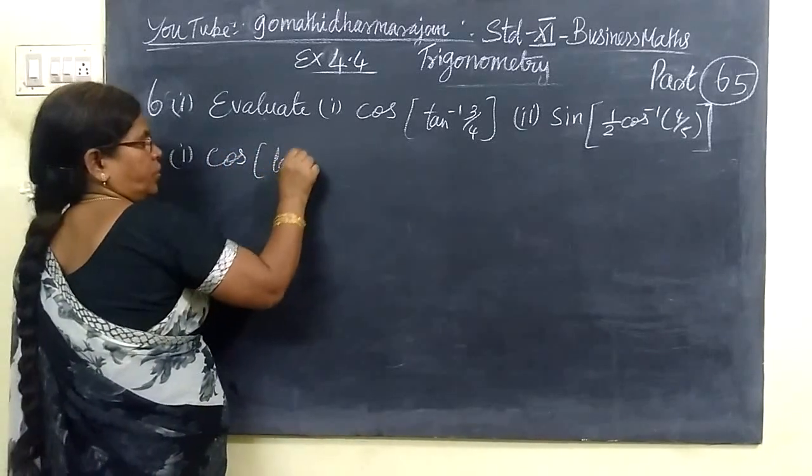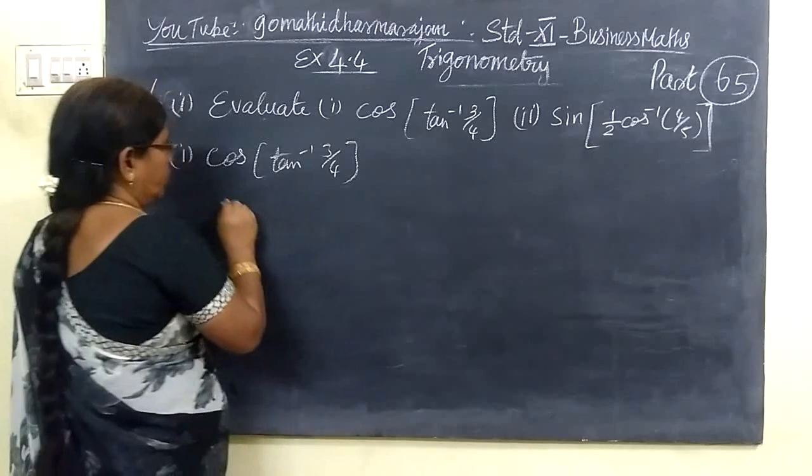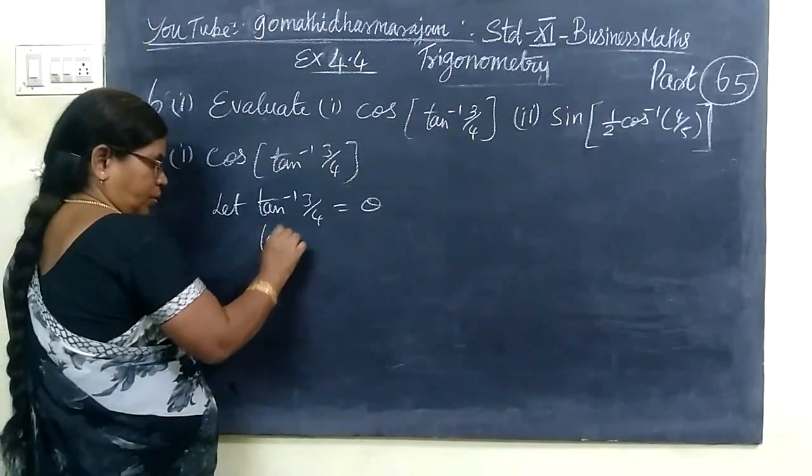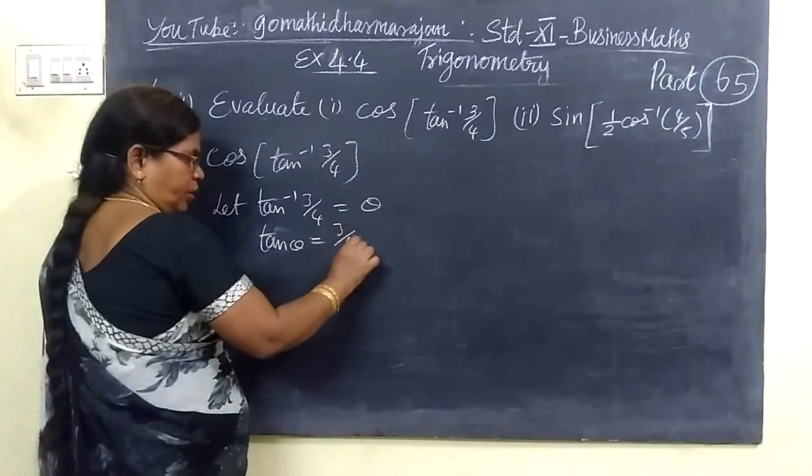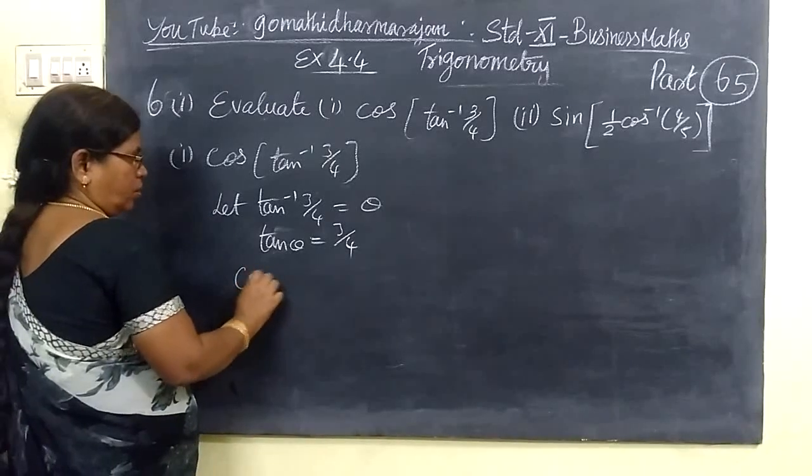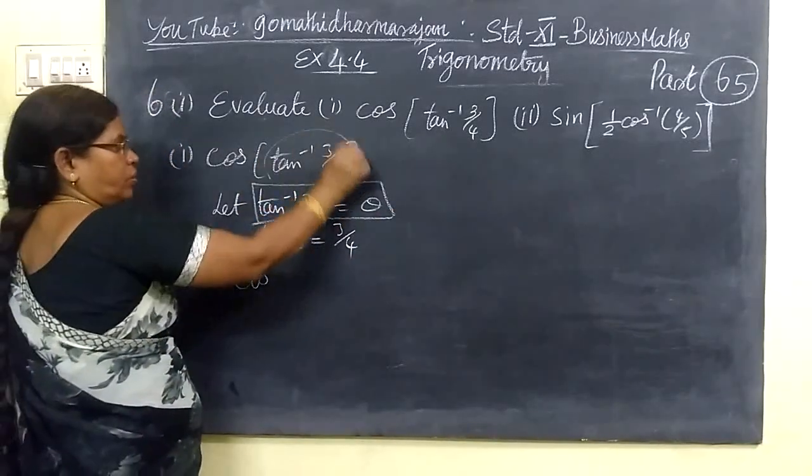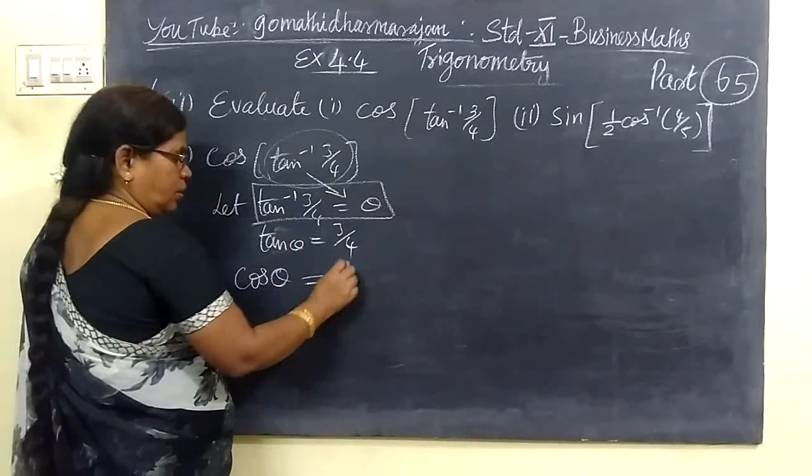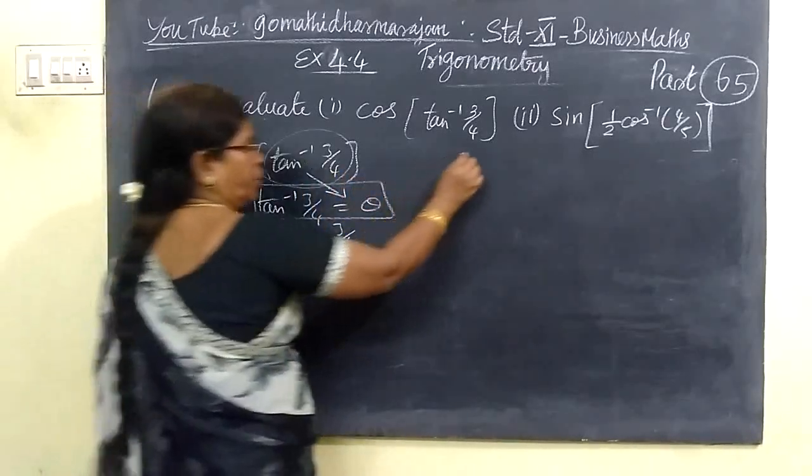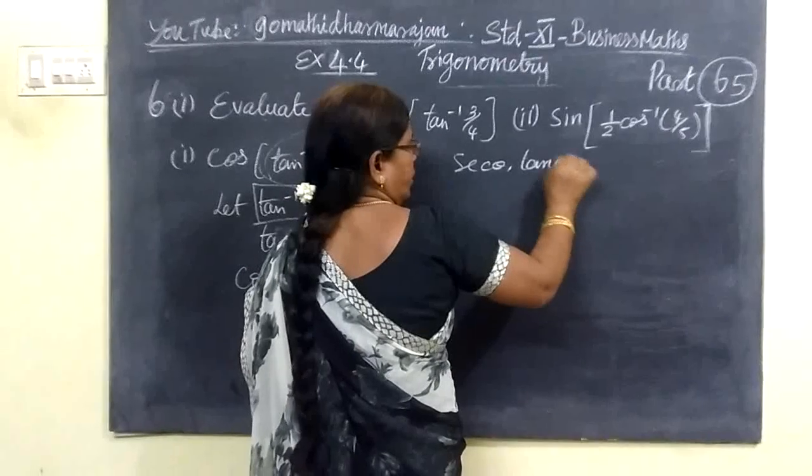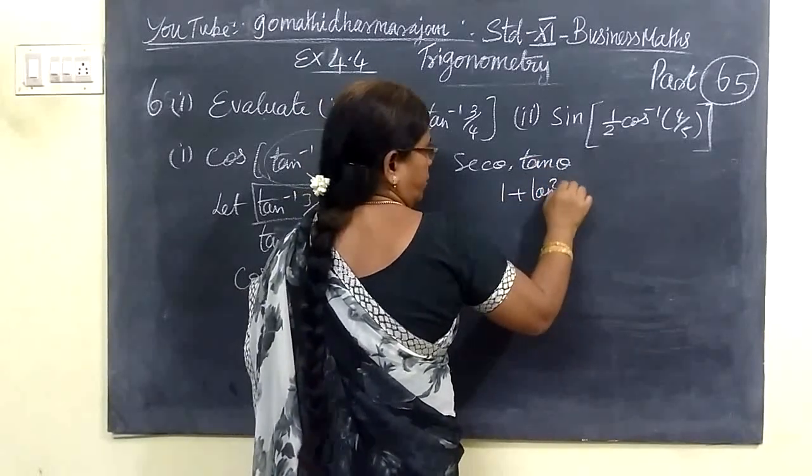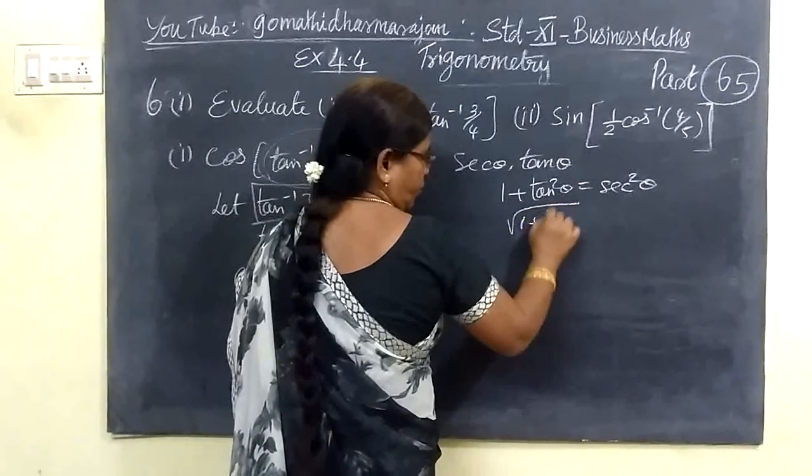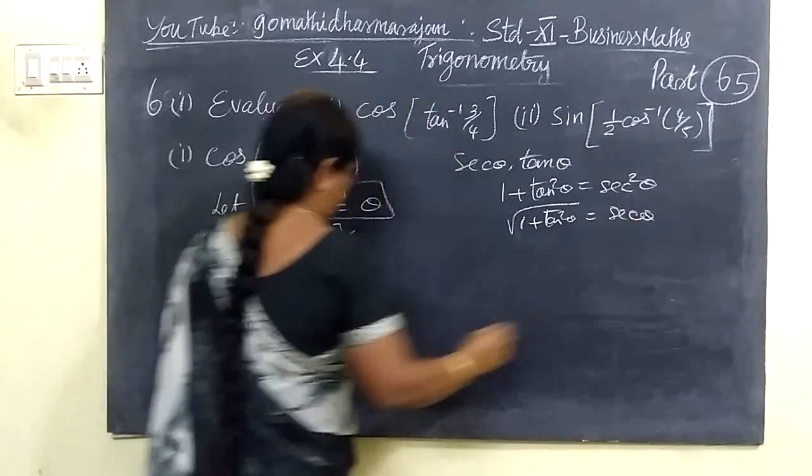cos of tan inverse 3 by 4. First, let tan inverse 3 by 4 equal to some theta. Now you take it. cos of tan inverse 3 by 4 equal to theta. This equation: tan inverse 3 by 4 equal to theta, then tan theta equal to 3 by 4.